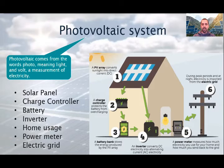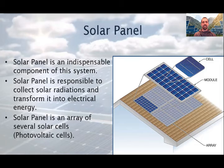The alternating current coming out of the inverter can be used for house applications, or if there is an excess amount of it, it can be sold and sent back into the electrical grid. Solar panel is an indispensable component of this system. It is responsible to collect solar radiations and transform it into electrical energy. Solar panel is an array of several solar cells. The arrays can be formed by connecting them in parallel or in series connection, depending upon the energy you require. We will check this in a few minutes.